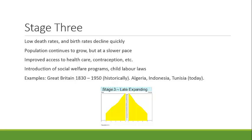In stage three, we still see low death rates, but now birth rates begin declining rapidly. Society has to deal with the issues of a growing population and for a variety of reasons birth rates start to fall. Population continues to grow but at a much slower pace. We start to see improved access to healthcare and contraception, the introduction of social welfare programs, and child labor laws — arguably in response to the social upheavals of stage two. Great Britain went through this period from about 1830 to 1950, and today countries like Algeria, Indonesia, and Tunisia are in stage three.